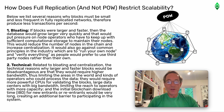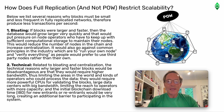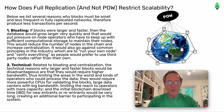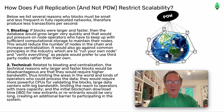How does full replication and not Proof-of-Work restrict scalability? Below we list several reasons why blocks must be small and less frequent in fully replicated networks, therefore producing less transactions per second. 1. Bloating. If blocks were larger and faster, then the database would grow larger very quickly and that would put pressure on node operators who have to keep up with sufficient computational storage to maintain their nodes. This would reduce the number of nodes in the chain and increase centralization. It will also go against common principles in the industry — which are to run your own node and verify everything — as people would prefer to use third-party nodes rather than their own.